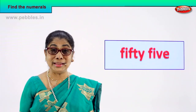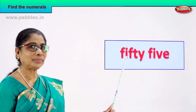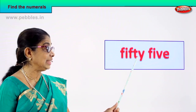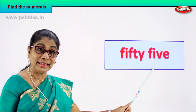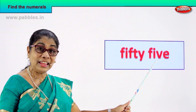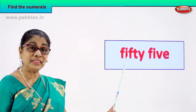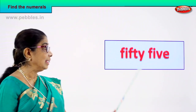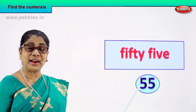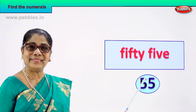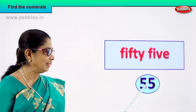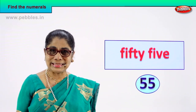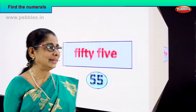Shall we take the next one? Read carefully and find the numeral for me. F-I-F-T-Y, 50, F-I-V-E, 5. So the numeral is 55. How do you write it? 5 and 5 — 55. Good!